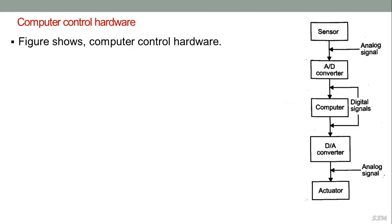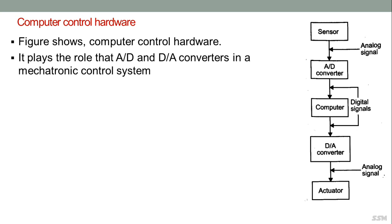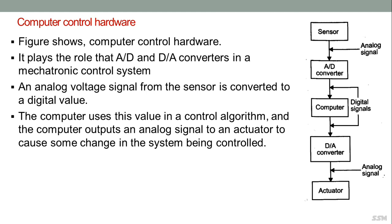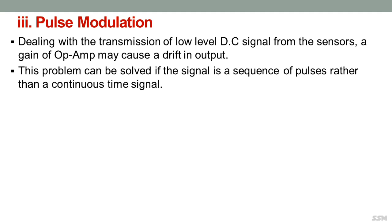The computer control hardware illustrates the role ADC and DAC converters play in a mechatronic control system. An analog voltage signal from a sensor — for example, a thermocouple — is converted to a digital value. The computer uses this value in a control algorithm and outputs an analog signal to an actuator, such as an electric motor, to cause a change in the system being controlled.